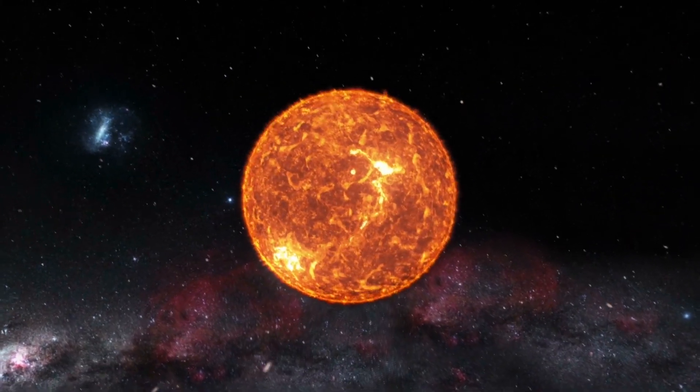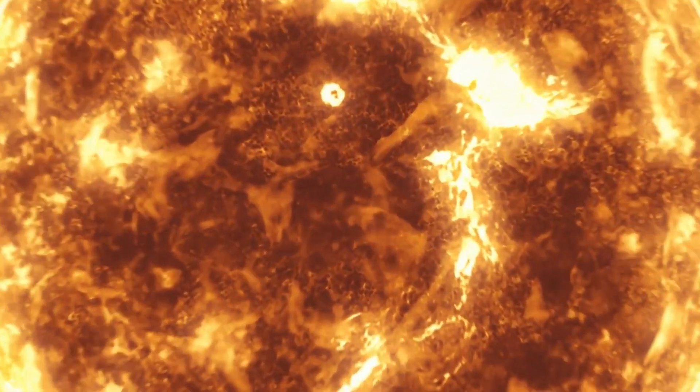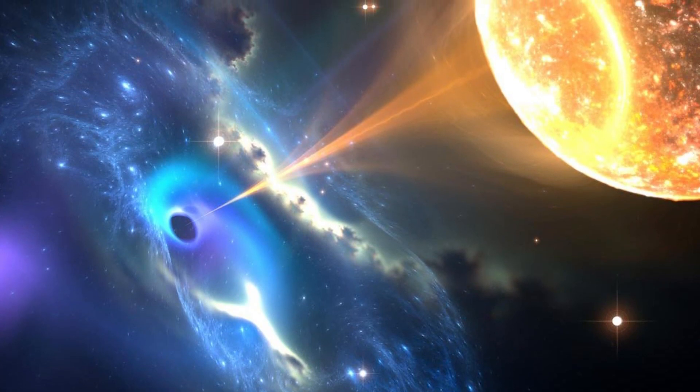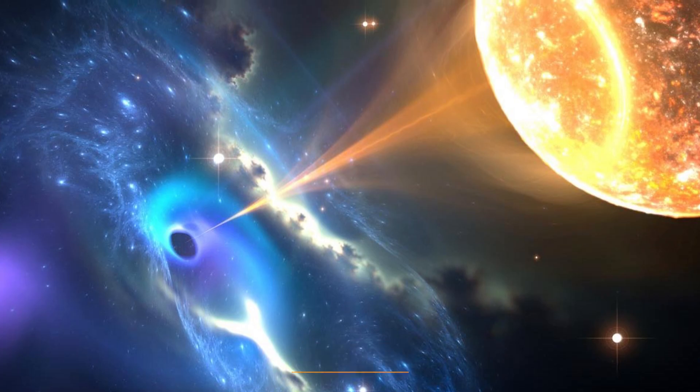You might be wondering how big they have to be. So let's use our sun as an example. Even if it were to die, it couldn't create a black hole since a black hole requires at least 20 times the mass of our sun to form.